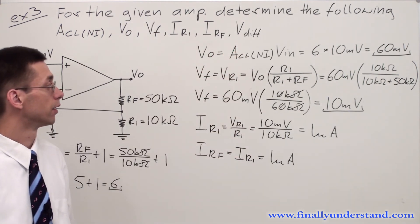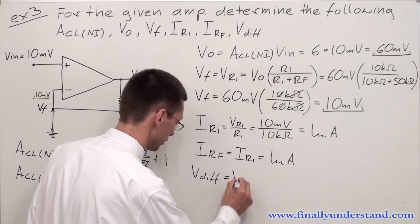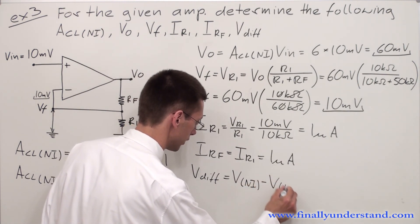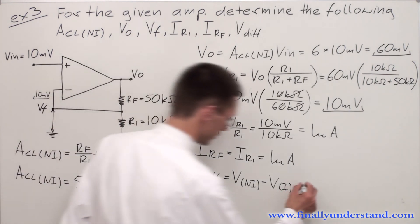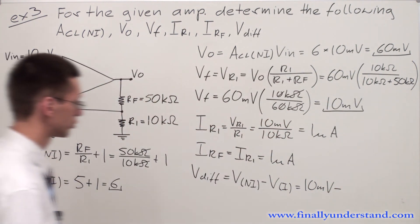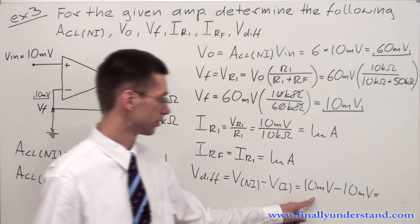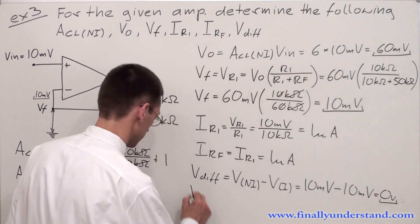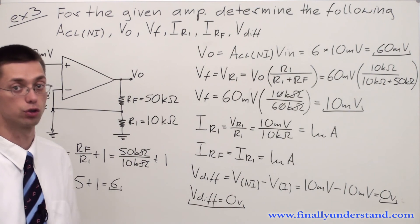Differential voltage — we find it from the formula: VD is equal to the voltage at the non-inverting input minus the voltage at the inverting input. The voltage at the non-inverting input is equal to 10 millivolts, and the voltage at the inverting input we found is also equal to 10 millivolts. 10 millivolts minus 10 millivolts gives me 0 volts. My differential voltage is equal to 0 volts, and this is my solution.